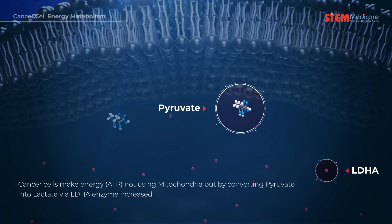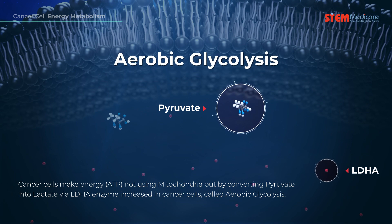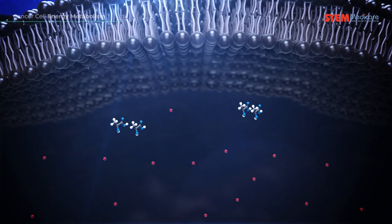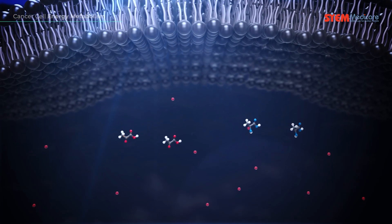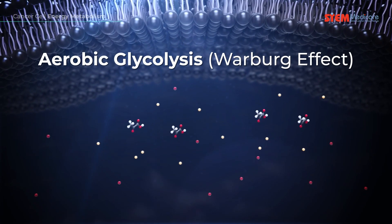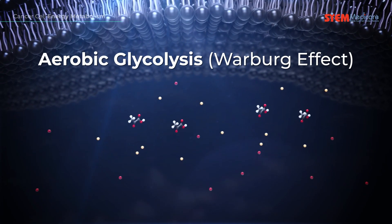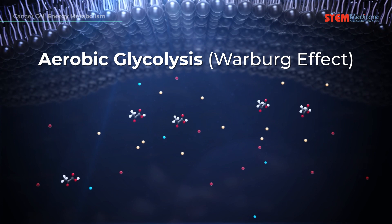Cancer cells make energy not using mitochondria but by converting pyruvate into lactate via lactate dehydrogenase A enzyme, called LDHA, which is abundant in most cancer cells. This is called aerobic glycolysis, better known as the Warburg effect.